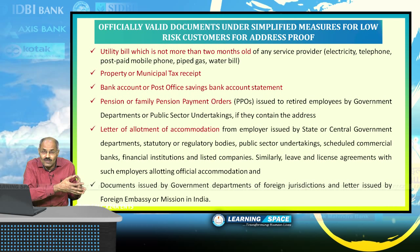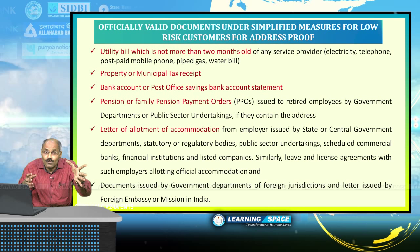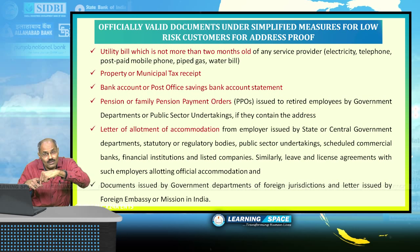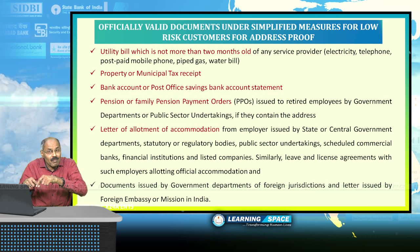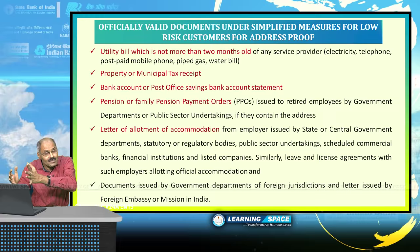To clarify once again: the six officially valid documents must be accepted by banks for any type of customer. In addition, banks can accept simplified measures for ID proof and address proof as notified by RBI. These simplified measures cover both ID proof as well as address proof when opening bank accounts.